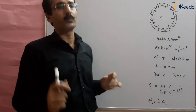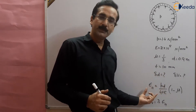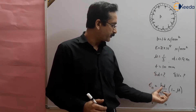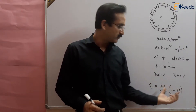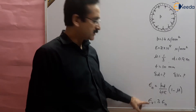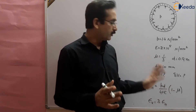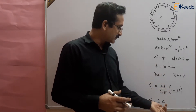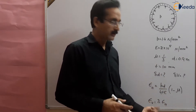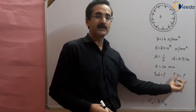You should remember the formula. We are going to use directly the formula that the hoop strain in case of spherical shells is given by Pd / (4tE) × (1 − μ). Volumetric strain is three times the hoop strain. There is no longitudinal strain here, only hoop strain — so in all directions this is hoop strain, making volumetric strain equal to three times the hoop strain. From these formulas we can find out the change in diameter and change in volume.